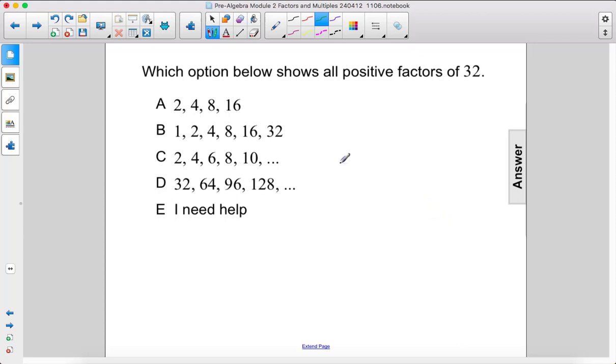Which option below shows all positive factors of 32? Since we're dealing with factors, 32 is going to be the largest number, so we can immediately get rid of 128. We know that number is larger than 32, so it can't be a factor.